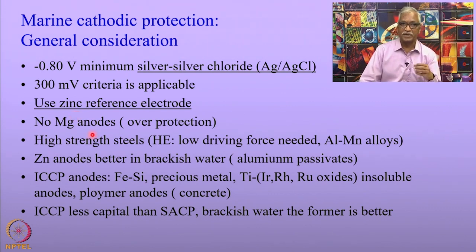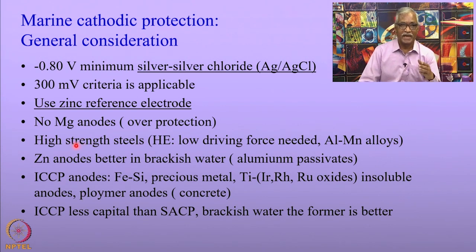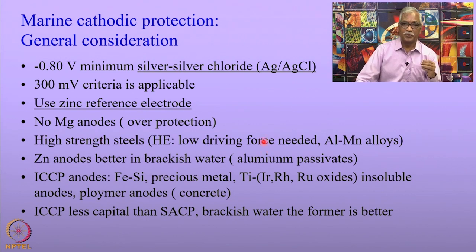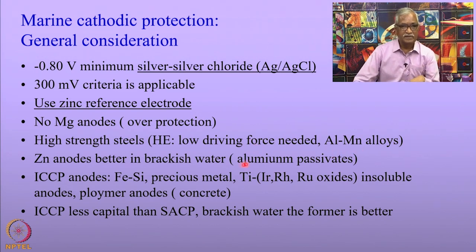No magnesium anodes are used in marine applications because they will over-protect the structures. Where high-strength steels are used in marine applications, since they are prone to hydrogen embrittlement, low driving force sacrificial anodes are required. One such anode is the aluminum-manganese anode.